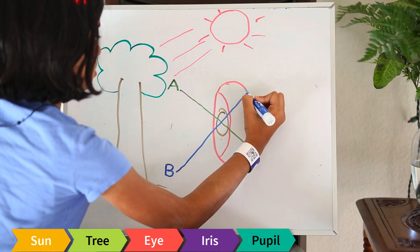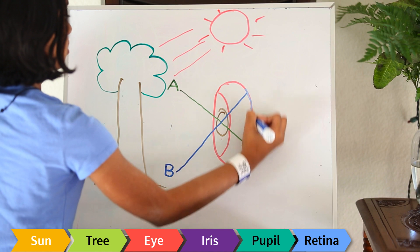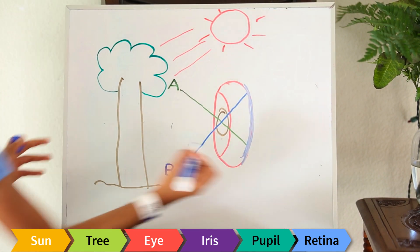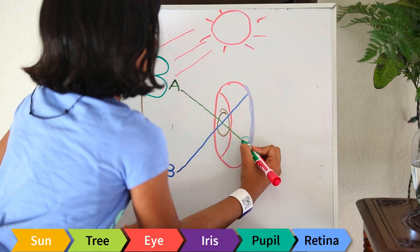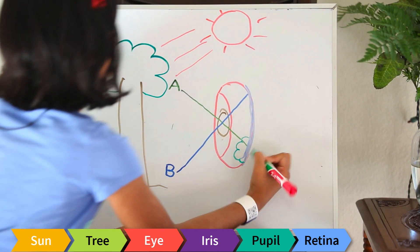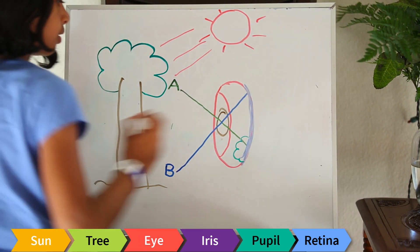The back of the eye is called the retina. The retina captures the image and flips it.